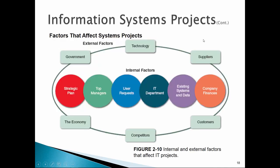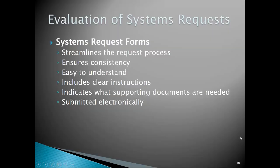Here's a graphic of what affects projects — the same internal and external factors we just discussed: external factors like technology changes (HTML 5 coming out when you were programming in 4), government requirements, supplier shortages (can't get materials to build the windscreen for an airplane), competitors, and the economy. Internal factors include strategic plan changes. We'll stop right here — this is Part 1, and we'll start with the Evolution of Systems Requests when we come back for Part 2. Take care.